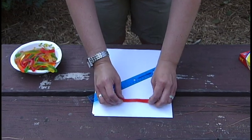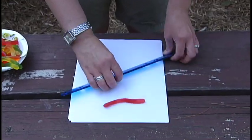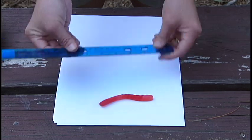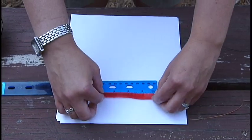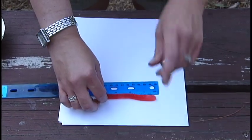The students will lay out their gummy worm on their piece of paper and measure it. My worm happens to be four inches, but that's not it.